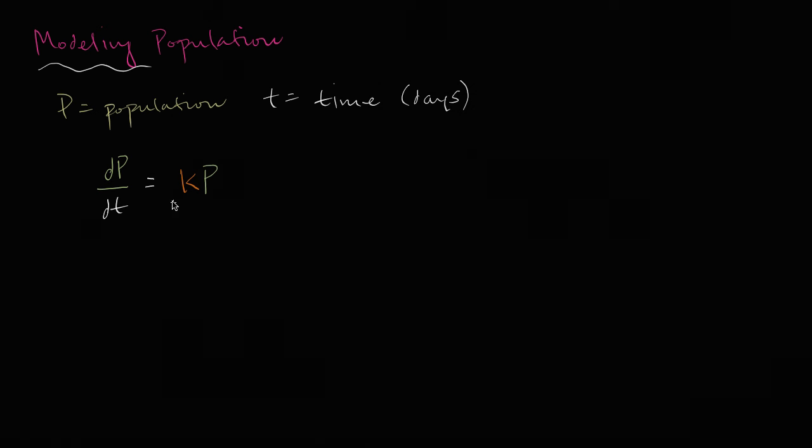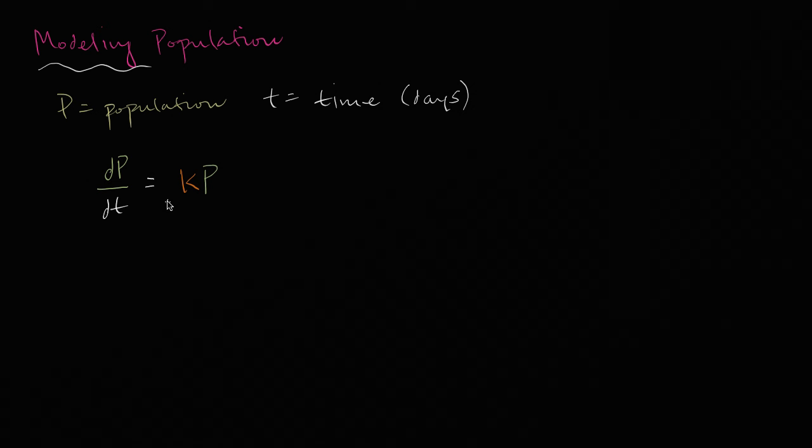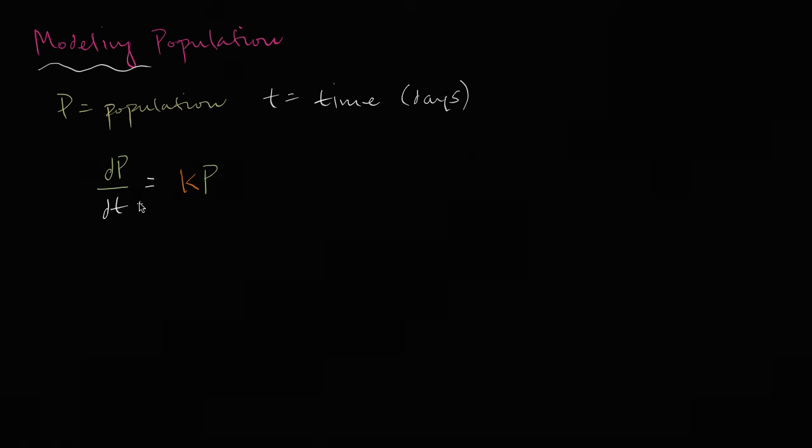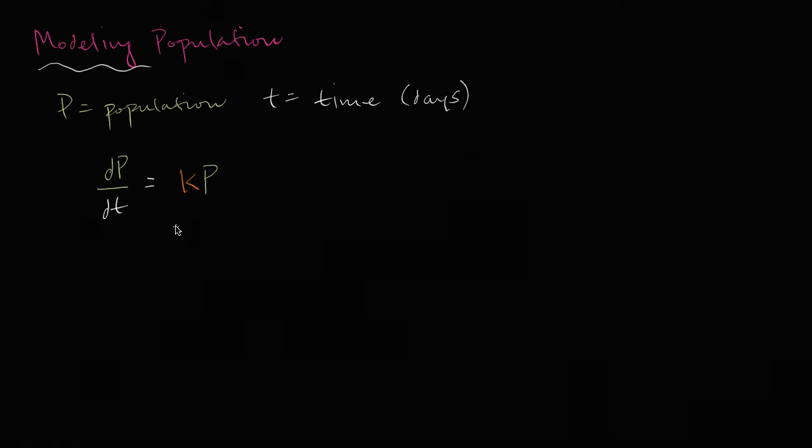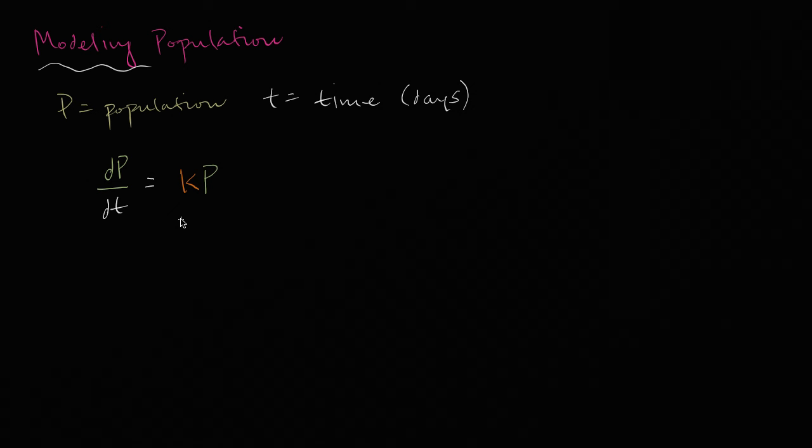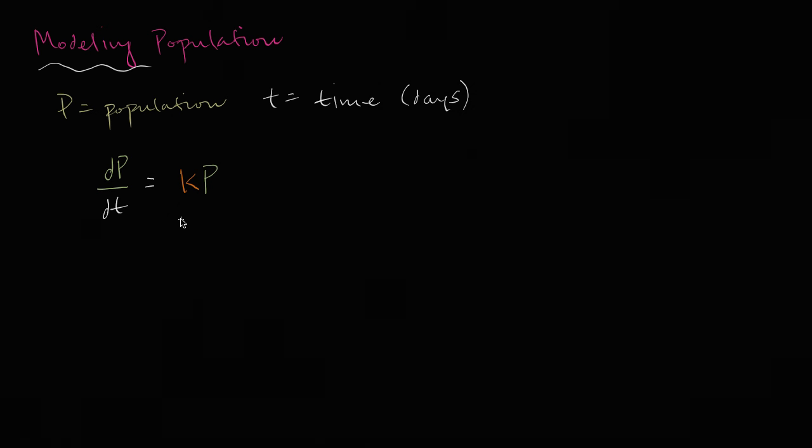Sometimes you think of differential equations as these daunting, complex things, but notice we've just been able to express a reasonably not so complicated idea. The rate of change of population is going to be proportional to the population. And now, once we've expressed that, we can actually try to solve this differential equation, find a general solution, and then we could try to put some initial conditions on there or some states of the population that we know to actually solve for the constants to find a particular solution.